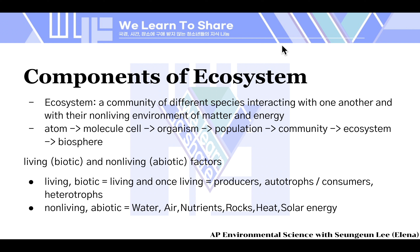Components of the ecosystem can be largely divided into two things. First is living, which are biotic factors, and non-living, which are abiotic factors. Living or biotic factors are living and once-living factors, which include producers — also called autotrophs — and consumers, which are heterotrophs. Non-living abiotic factors include things like water, air, nutrients, rocks, heat, and solar energy.